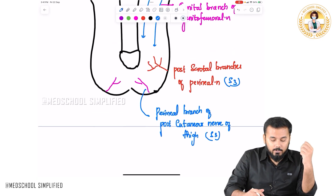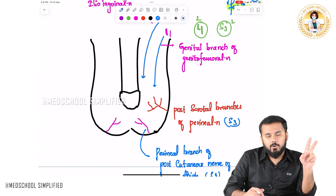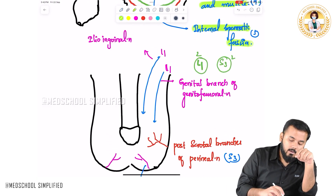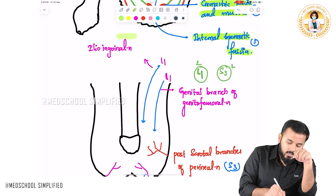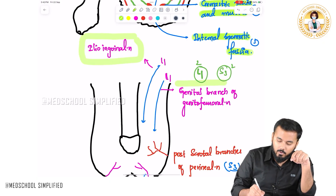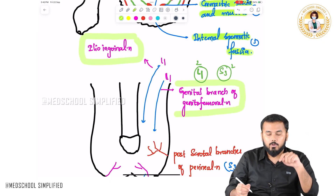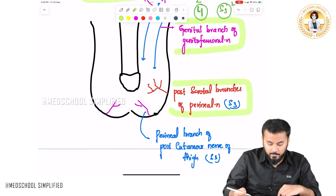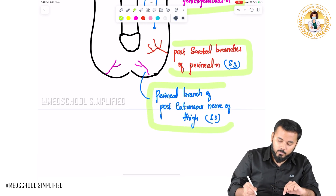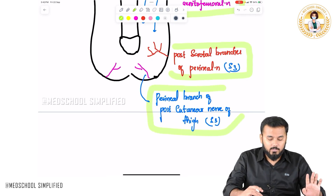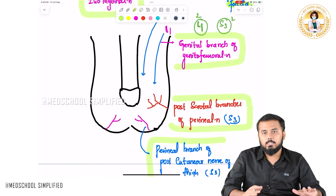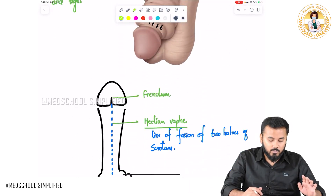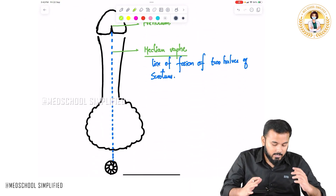In summary, there are two L1 branches — the ilioinguinal nerve and the genital branch of the genitofemoral nerve — and two S3 branches — the posterior scrotal branches of the perineal nerve and the perineal branches of the posterior cutaneous nerve of thigh. These are the important structures to know regarding the testis and coverings of the scrotum.